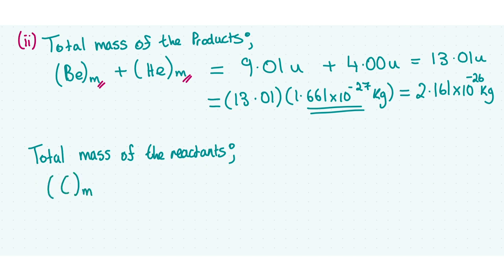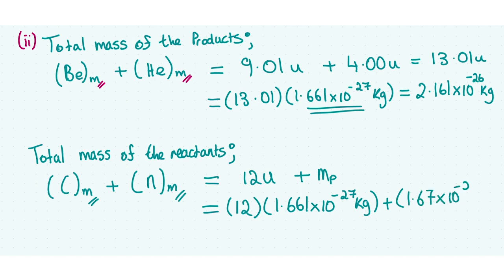Now moving on to the total mass of the reactants, we have the mass of a carbon-12 atom and the mass of a neutron. The mass of a carbon atom is 12 unified atomic mass units, but the mass of the neutron, which is interesting, is just equal to the mass of the proton, and we know this in theory. All we need to do now is substitute in our values since we know the mass of the proton from the Formula and Tables book.